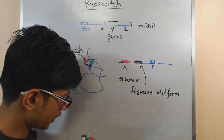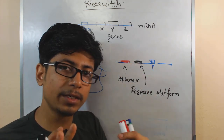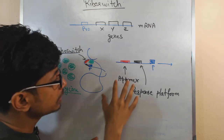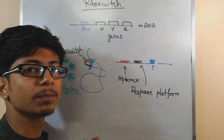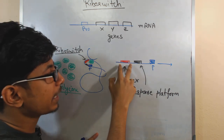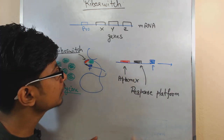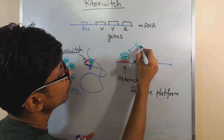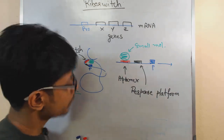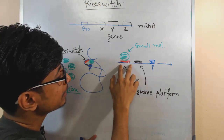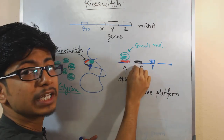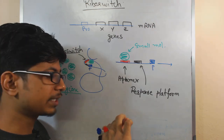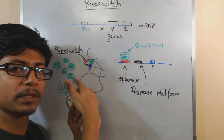The aptamer and response platform combined together make the riboswitch. The aptamer is the segment which binds with the small molecule — it has affinity to interact with the small molecule, and this interaction is RNA–protein interaction most of the time. Once the aptamer binds to that small molecule, it transmits a kind of change to the response element section.